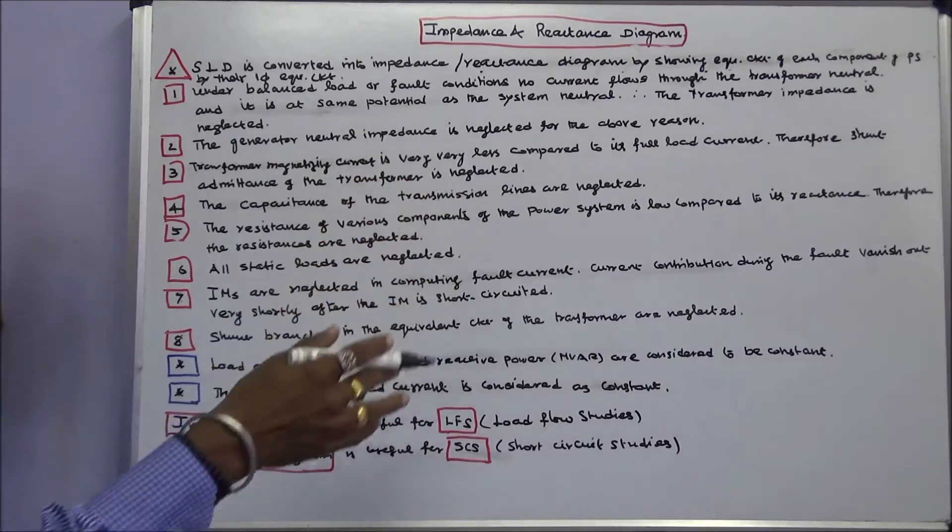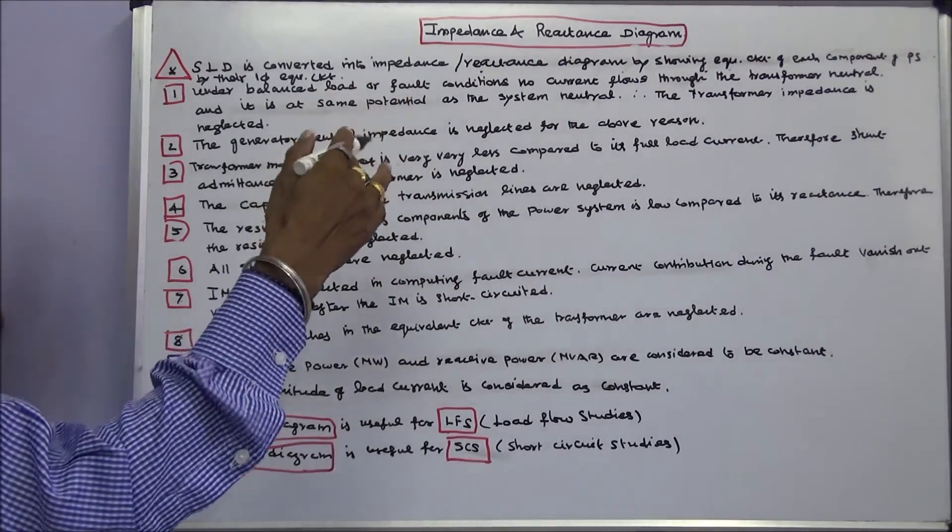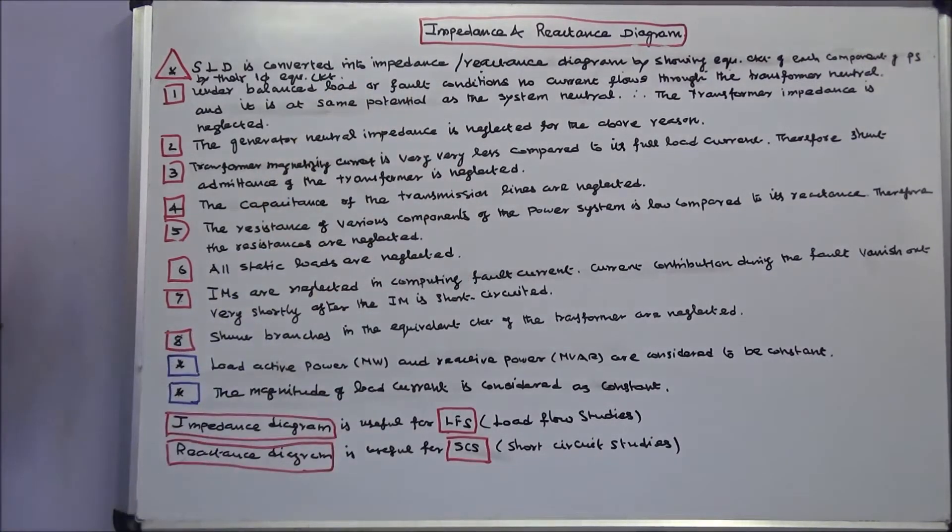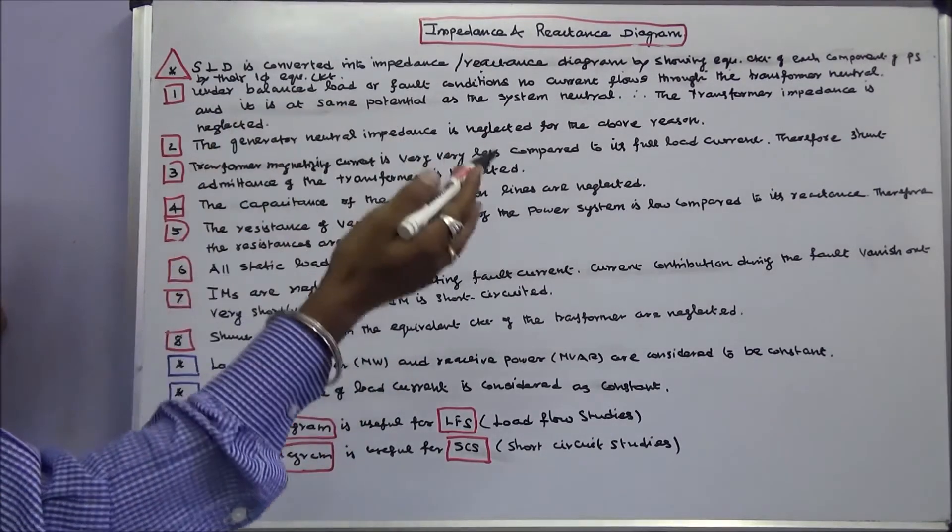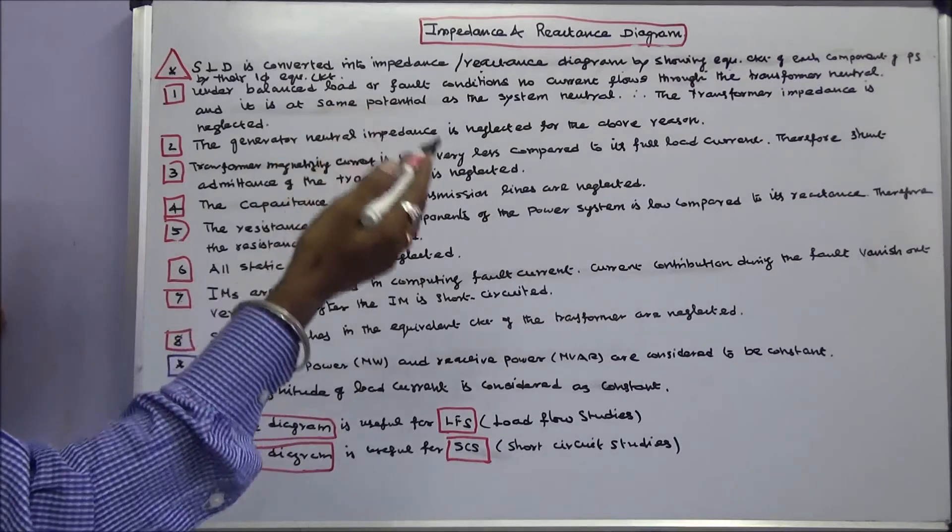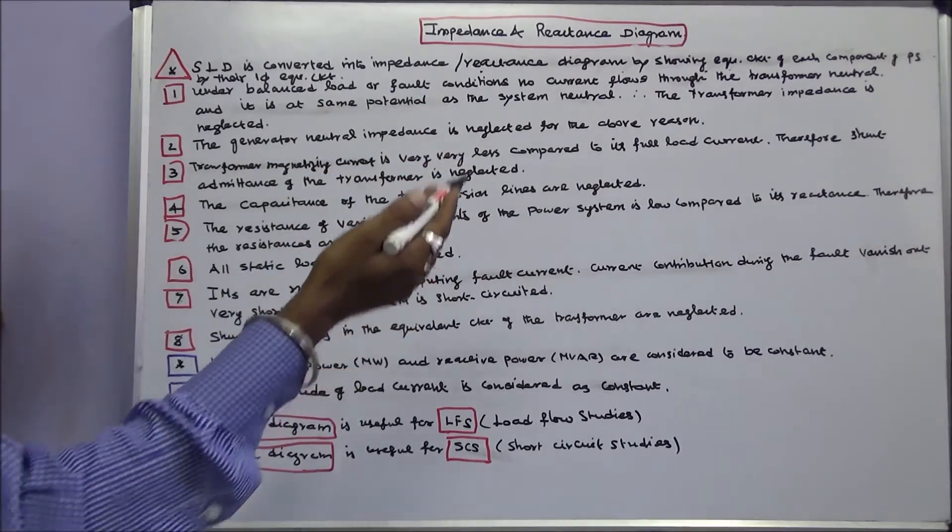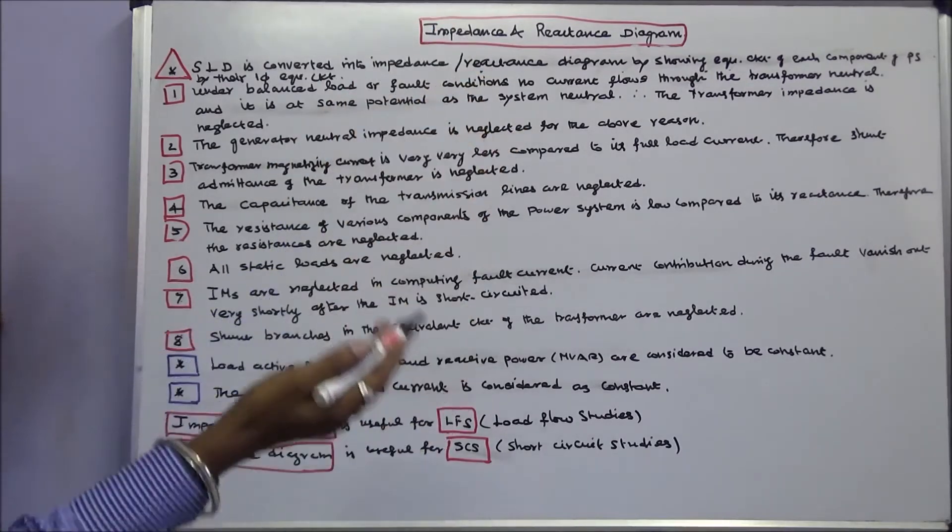In this class we discuss the difference between impedance and reactance diagrams. Single line diagram SLD is converted into impedance or reactance diagram by showing the equivalent circuit of each component of the power system.